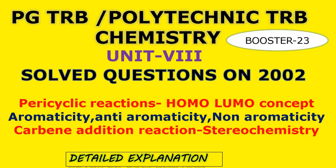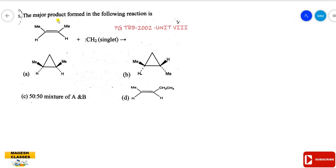Let us move into the video part. The major product formed in the following reaction: an alkene is treated with singlet carbene — what is the major product? It seems to be a basic question but it can be difficult.